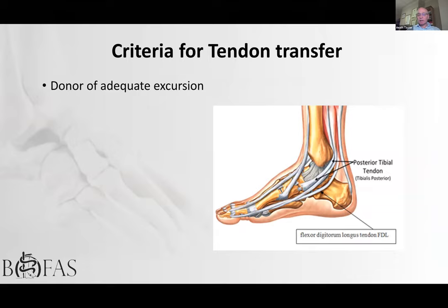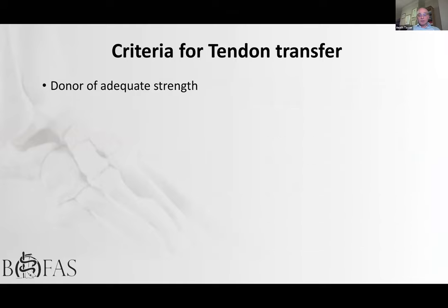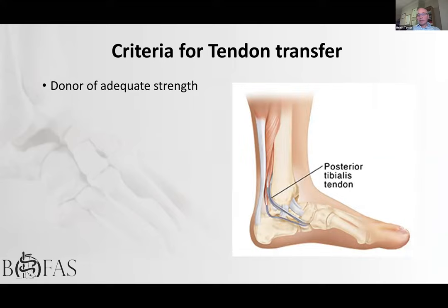Excursion matching is important — you want to match the excursion of the donor tendon to the deficient site. FDL is a good example for tibialis posterior dysfunction, as it has a good long excursion. Tendon strength should also be matched: tibialis posterior is a similar size to tibialis anterior, making it a good donor for foot drop reconstruction. However, even without active muscle contraction, a good tenodesis effect in a mobile joint can provide functional benefit.